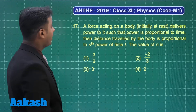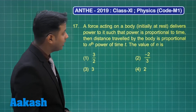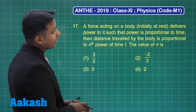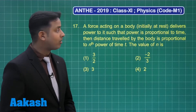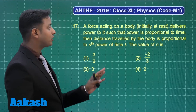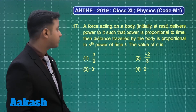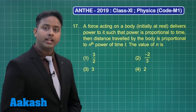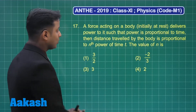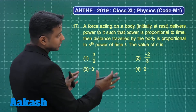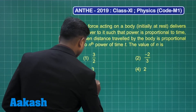Question number 17 says: a force acting on a body initially at rest delivers power to it such that power is proportional to time. The distance travelled by the body is proportional to the nth power of time — find the value of n. This is an analytical question, so let us try to solve this.